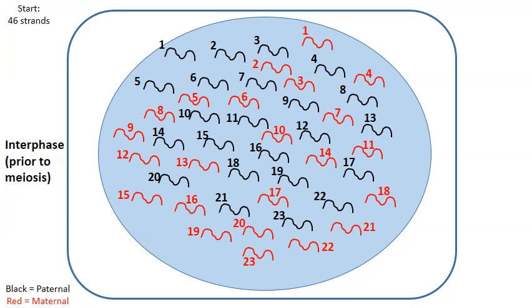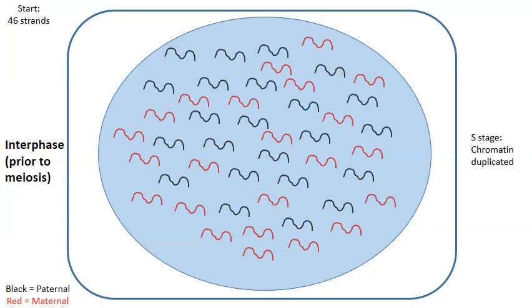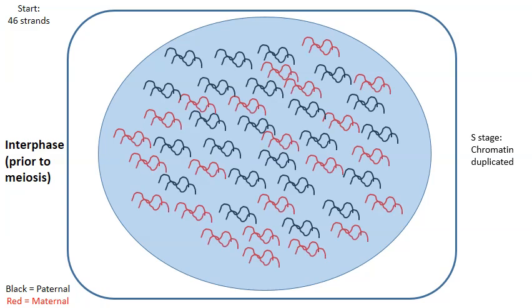So as we move into the S stage of interphase, notice what happens is the chromatin is copied and duplicated. So the 46 strands actually duplicates to form 92 strands. Well now we enter into meiosis. Meiosis number one. There's meiosis one and there's meiosis two. There's two rounds of cell divisions in meiosis.